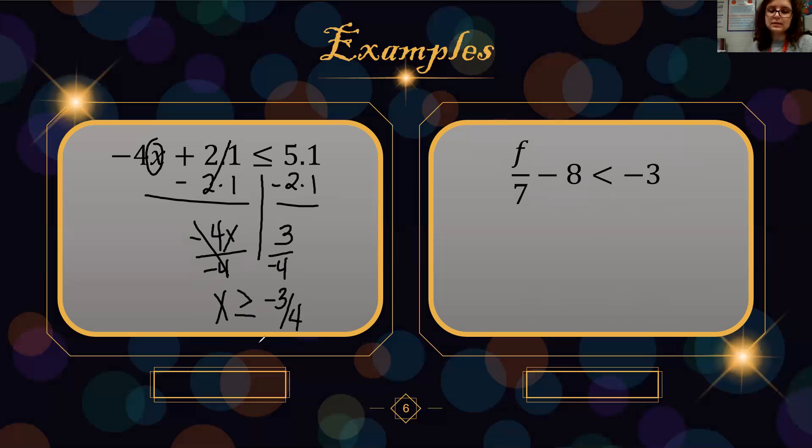And for our last example. Split the sides, circle my variable. F over 7 minus 8 is less than negative 3. We undo subtraction with addition. So F over 7. Different signs tell me to subtract. I get 5. I have more positive, so this is a positive 5. I undo division with multiplication.